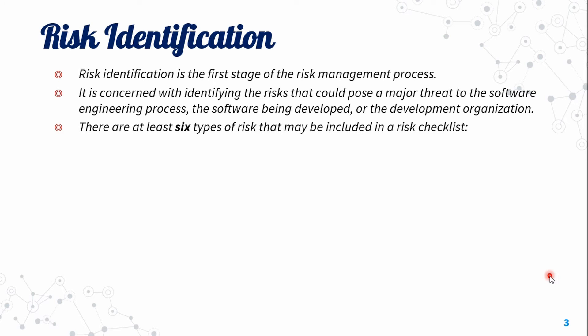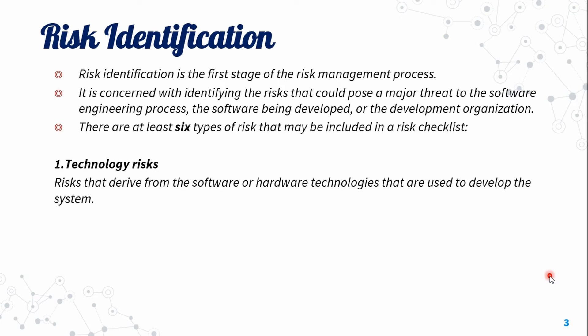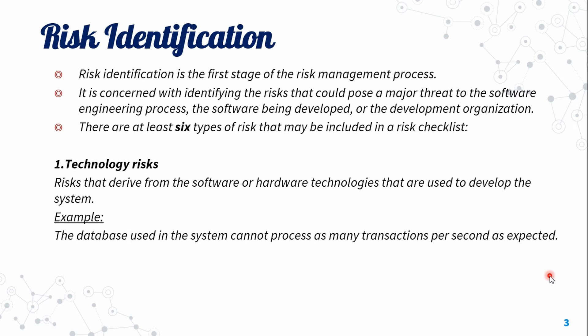There are at least six types of risks that may be included in the risk checklist. The first type is technology risks — risks that derive from the software or hardware technologies used to develop the system. For example, the database used in the system cannot process as many transactions per second as expected.